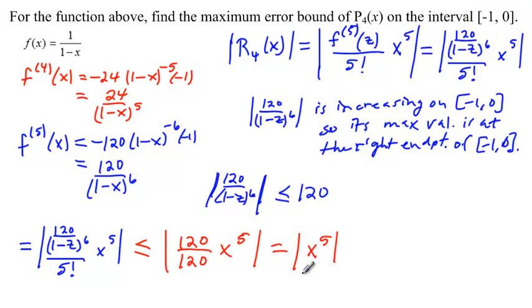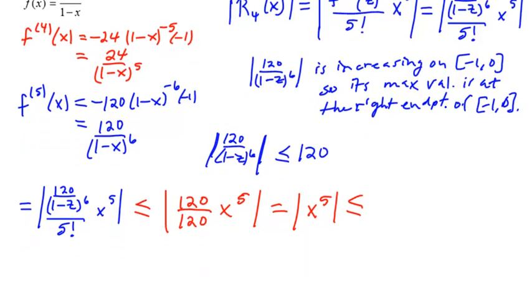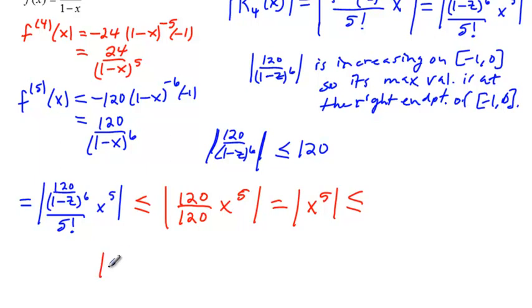But in this case, the absolute value of x to the 5th have its maximum value. Now, in order to think about that, and maybe I should put here less than or equal to right away, but in order to think about that, we've got to know what the absolute value of x to the 5th is doing on the interval from negative 1 to 0.